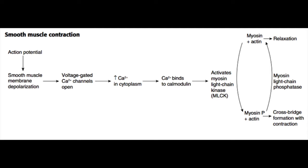With that in mind, let's think about how this works. When calcium enters the cytoplasm it binds a molecule called calmodulin, and when calcium binds to calmodulin it activates a protein called myosin light chain kinase. A kinase is a molecule that phosphorylates, so when myosin light chain kinase is activated, it starts to phosphorylate myosin. Phosphorylated myosin is more likely to interact with actin and you will get contraction of the smooth muscle.